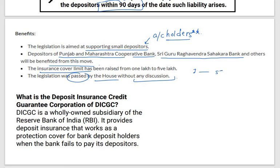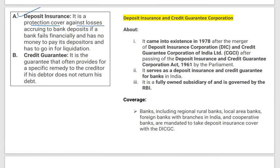What is the Deposit Insurance Credit Guarantee Corporation — DICGC? It is a wholly-owned subsidiary of RBI. It provides deposit insurance that works as a protection cover for bank depositors in case of any moratorium or vulnerability the bank faces. Deposit Insurance is a protection cover against losses accruing to bank deposits if a bank fails financially. Credit Guarantee is the guarantee that provides a specific remedy to the creditor if his debtor does not return the debt.